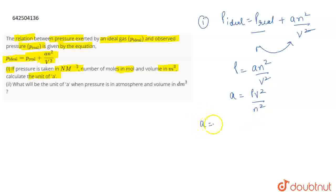So we have the units of pressure as Newton per meter squared. And the unit of volume which is given to you in part A is meter cubed and the unit of n which is moles is given to you as mol. So what will be the unit of A?